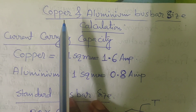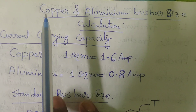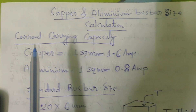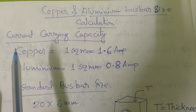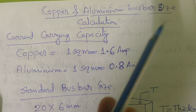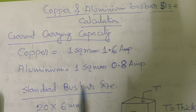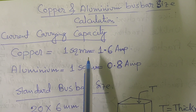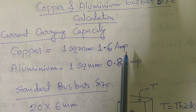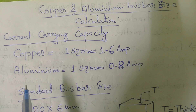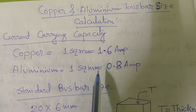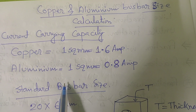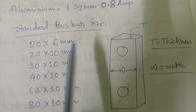Busbars are made of copper and aluminum. Now let's discuss copper and aluminum busbar size calculations. Current carrying capacity, or CCC: 1 square mm of copper busbar can carry 1.6 amperes of current, and 1 square mm of aluminum busbar can carry 0.8 amperes of current.